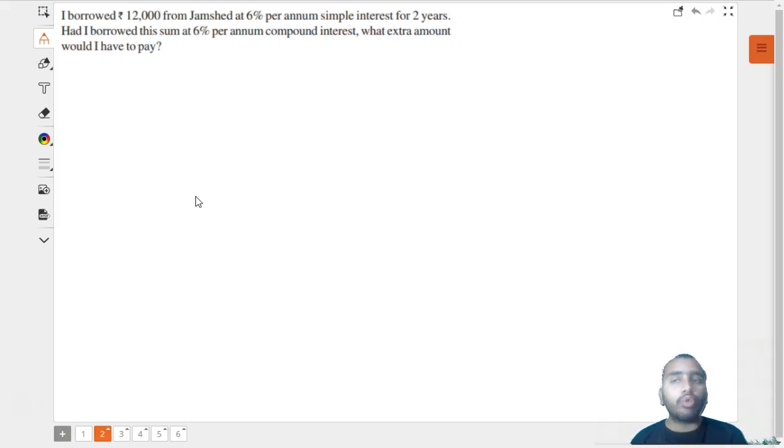The problem says: I borrowed rupees 12,000 from Jamshed at 6% per annum simple interest for 2 years. Had I borrowed this sum at 6% per annum compound interest, what extra amount would I have to pay?